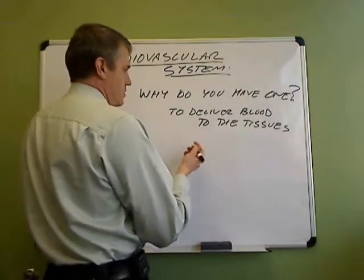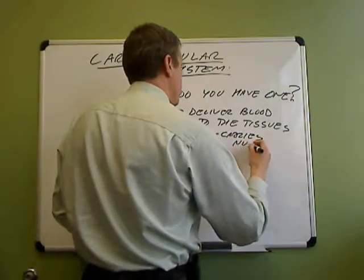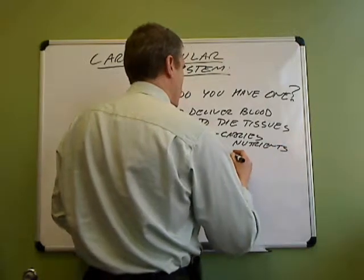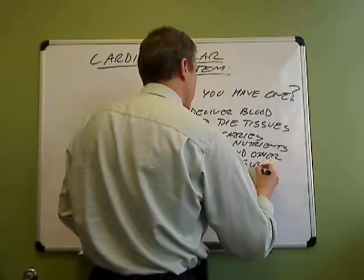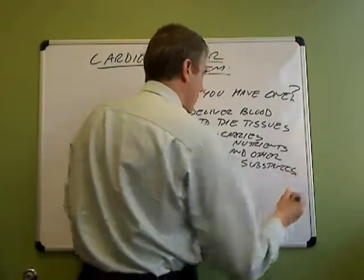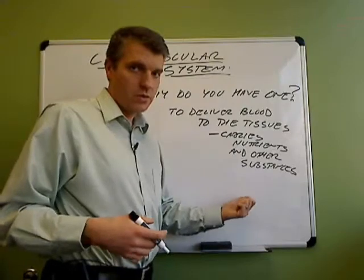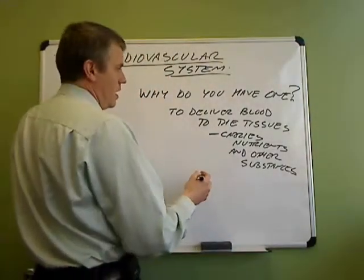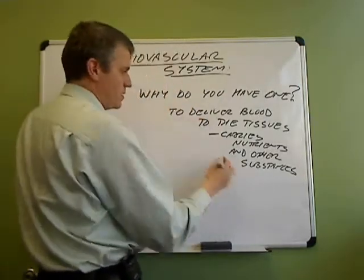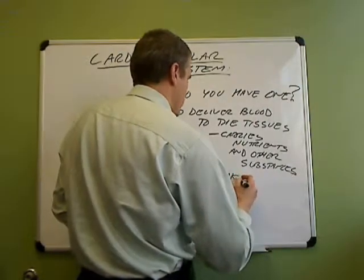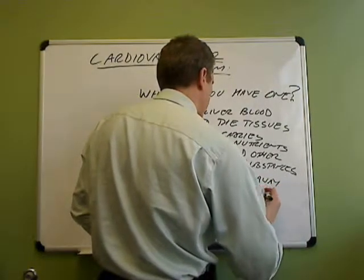That blood also carries other substances. For example, hormones that come from the endocrine glands — the blood delivers those hormones to the tissues where the hormone will have its effect. But then also, this blood being pumped by the cardiovascular system takes away waste products.